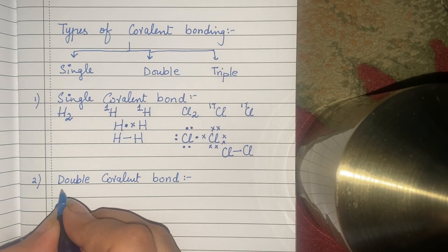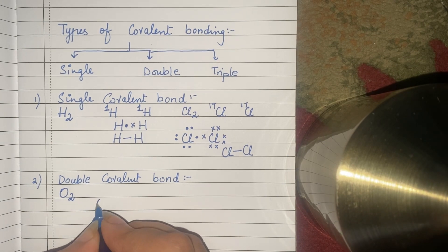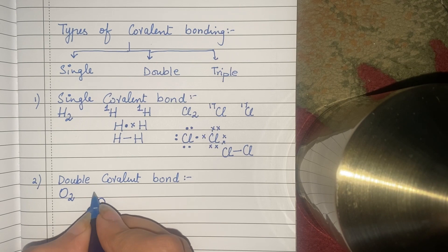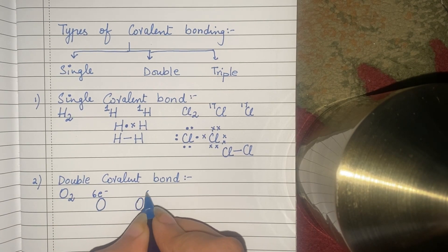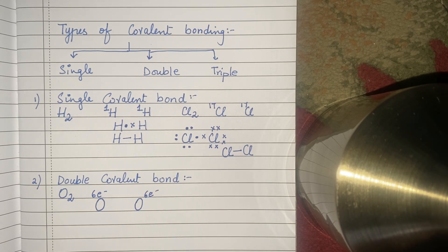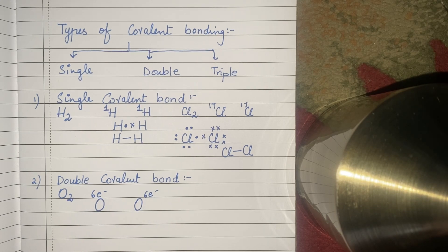यहाँ पर हम लोग एक example कर लेते हैं, O2 की. Oxygen के outermost shell में हमारे पास six electrons होते हैं. O2 है — दो oxygen हैं, तो दोनों के outermost shell में six electrons हो गए. अब oxygen को stable होने के लिए दो electrons चाहिए, क्योंकि अगर उसके अंदर eight electrons होंगे तो वो octet को follow करेगा, as a result वो stable हो जाएगा. तो दोनों oxygen अपने दो-दो electrons को share करेंगी, as a result वो एक stable configuration achieve करेंगी.